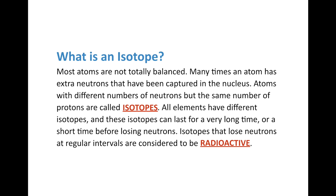Just remember: atoms consist of protons, neutrons, and electrons. The protons and neutrons are in the nucleus, and the electrons orbit in a cloud — we're never quite sure where, which is why we call it a cloud. Ions are atoms that have different numbers of electrons and protons, and if you have different numbers of neutrons, we call that an isotope. As always, if you have any questions please let me know, and thanks for watching.